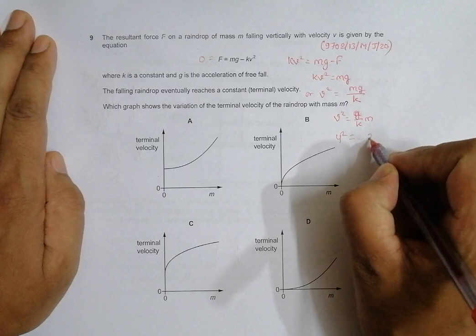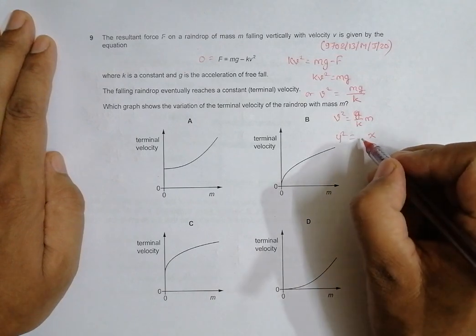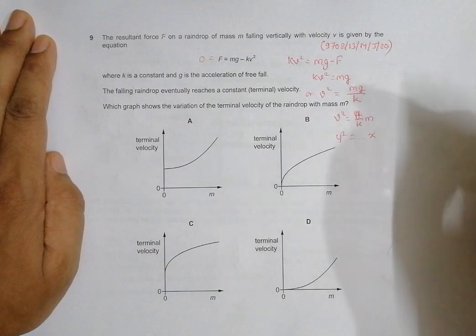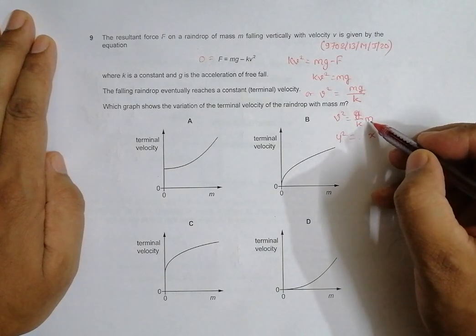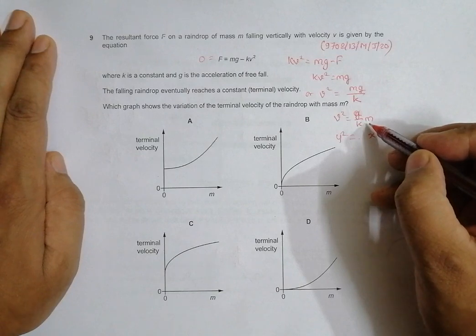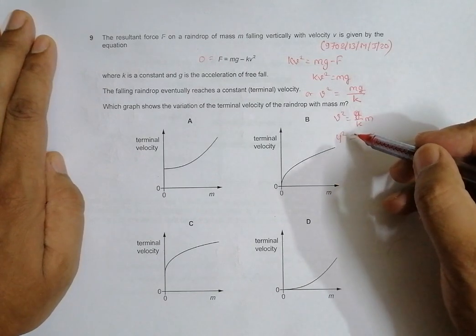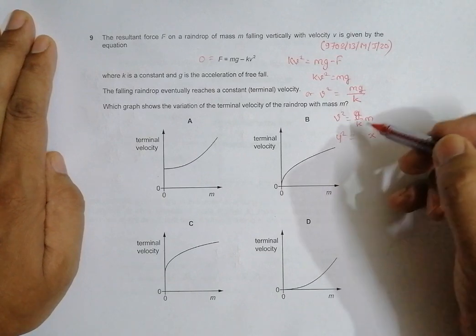This equation resembles something like Y squared equals some constant times x. If you have this sort of equation, then the graph of Y and x would be a parabola which bends towards the x-axis. So we should have a parabola bending towards the m-axis. Such parabola exists only in choice B.